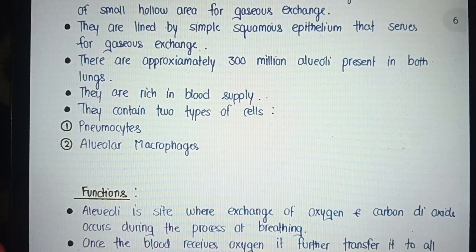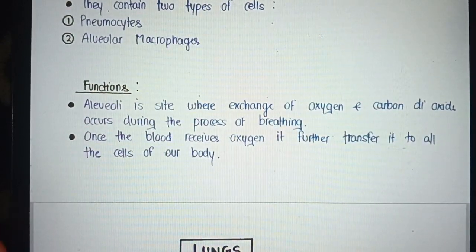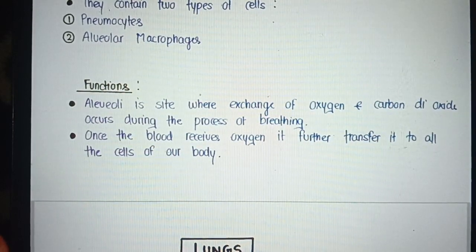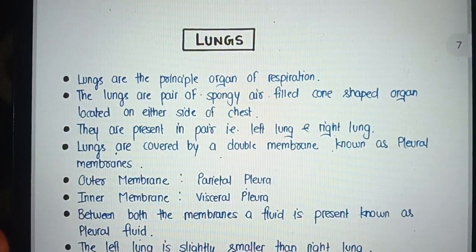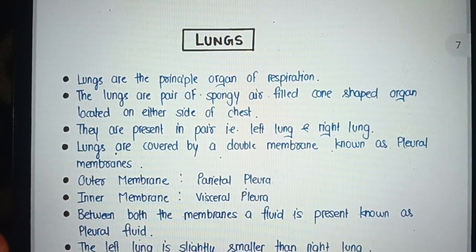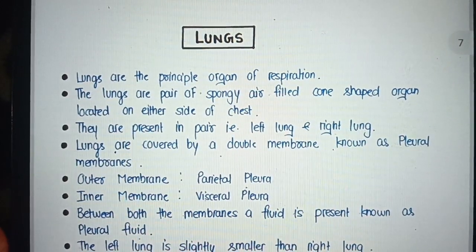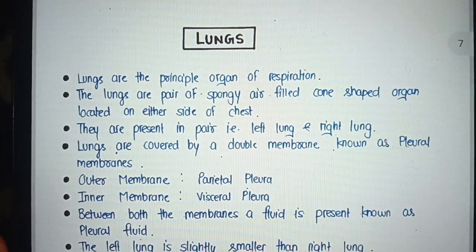Alveoli. Alveoli are known as the functional unit of the lungs and consist of small hollow areas for gaseous exchange. They are lined by simple squamous epithelium that serves for gaseous exchange. There are approximately 300 million alveoli present in the lungs. They are rich in blood supply and contain two types of cells: pneumocytes and alveolar macrophages.